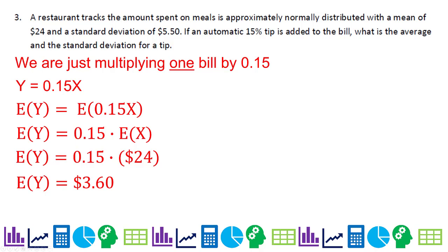When multiplying everything by a constant, the multiplier comes out in front and the expected value of x is $24, giving an expected value of $3.60. For the variance, the 0.15 comes out squared, because variance is standard deviation squared.